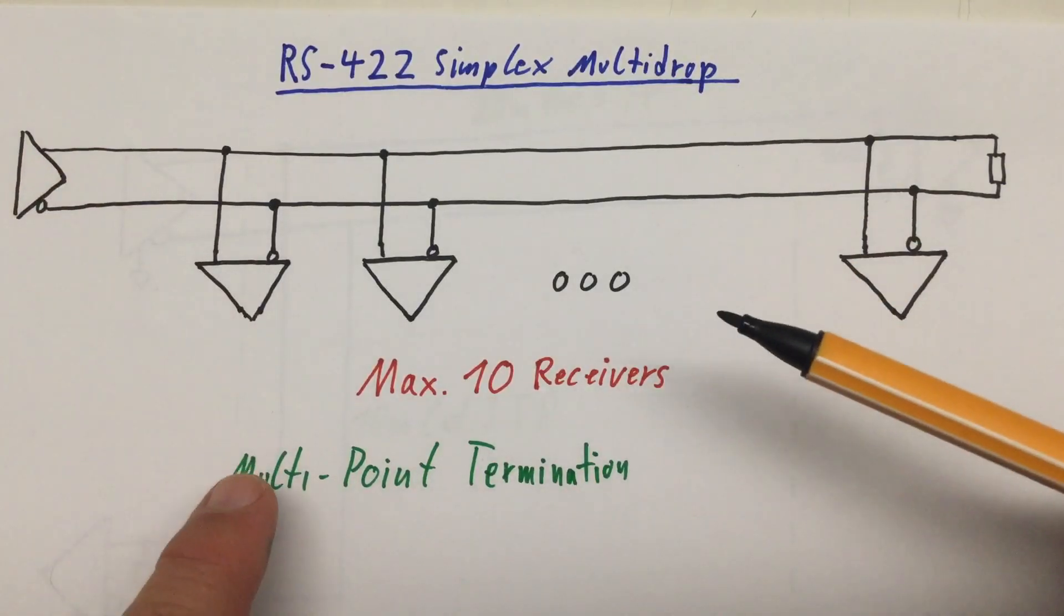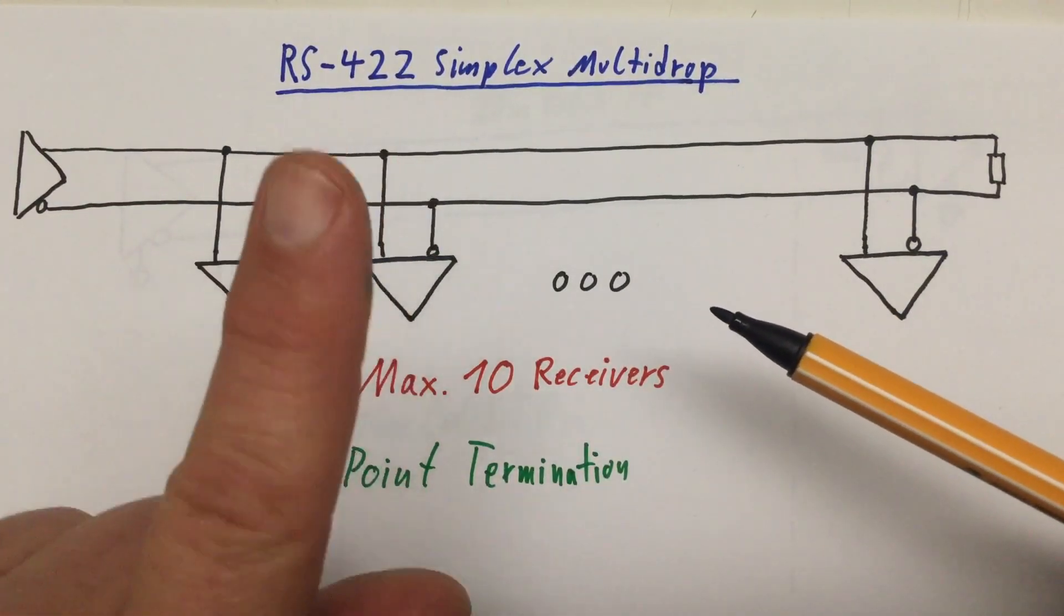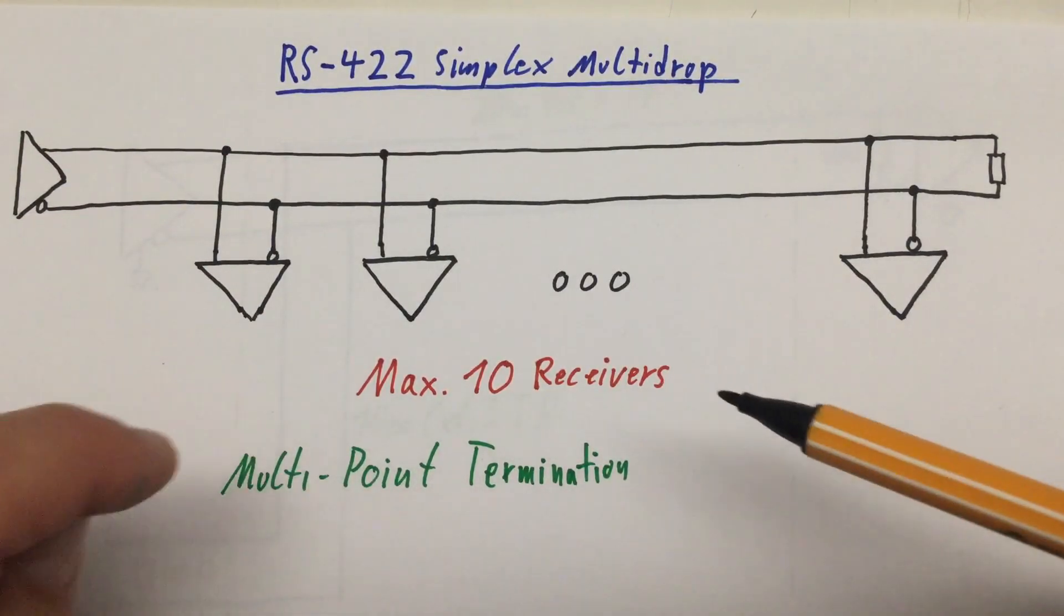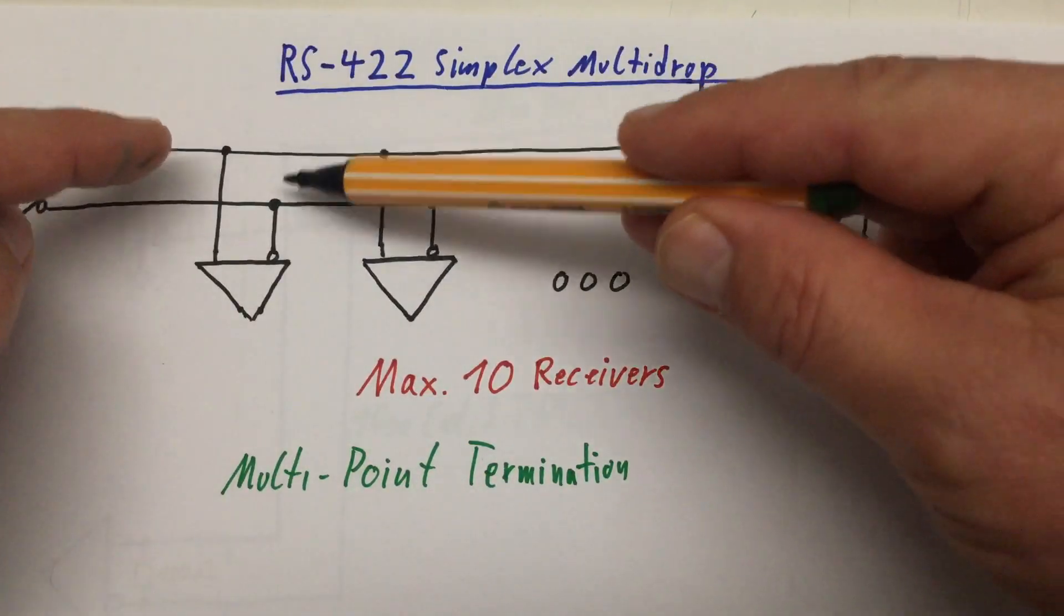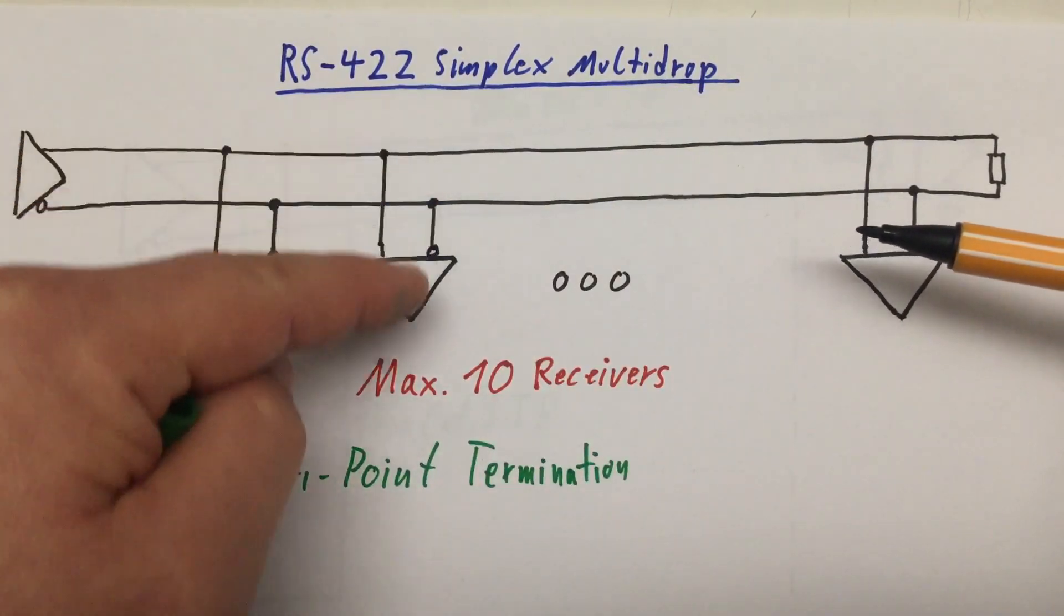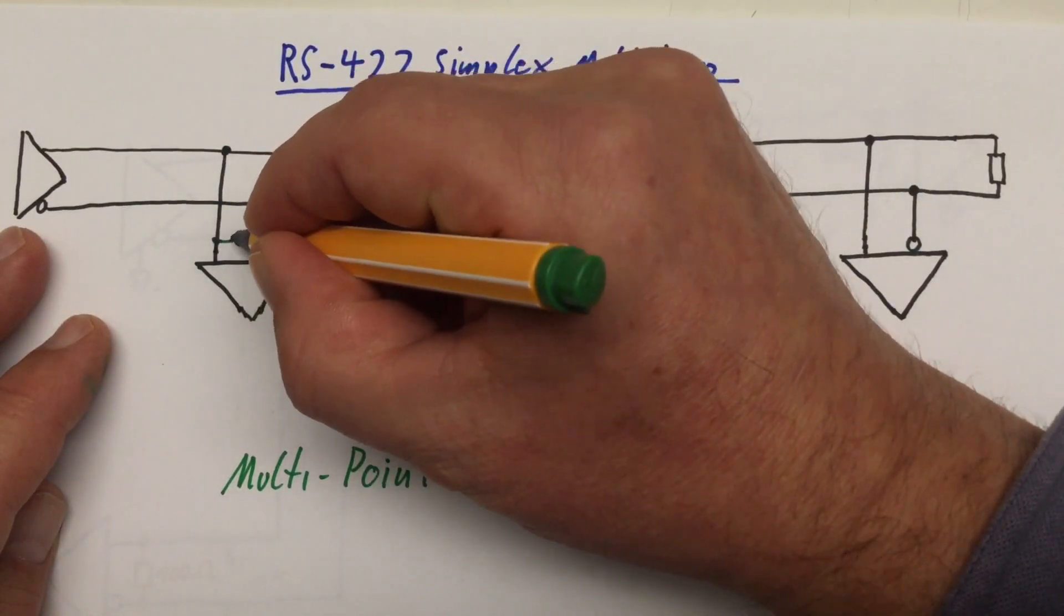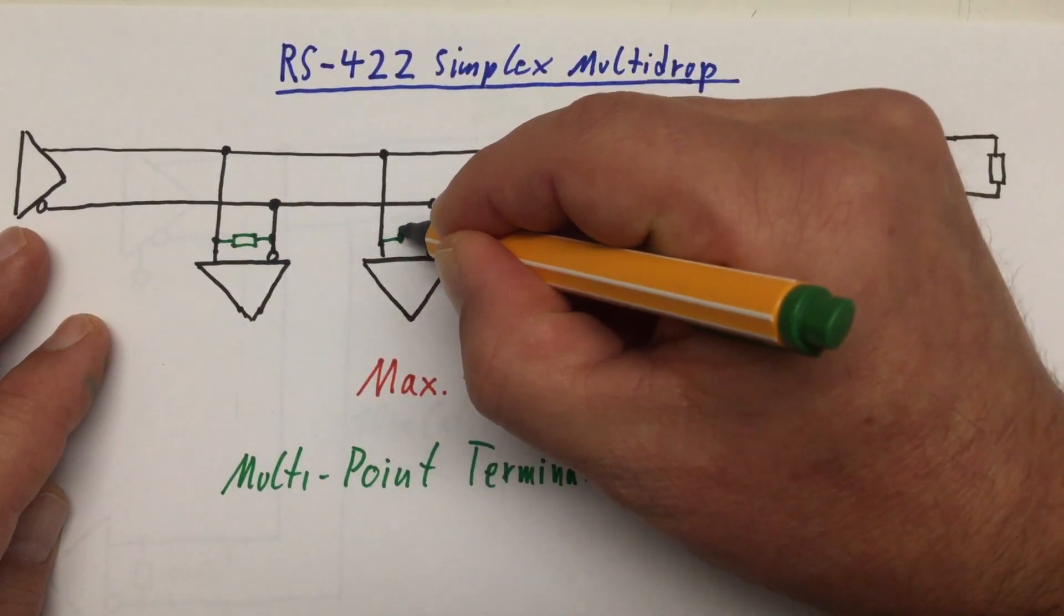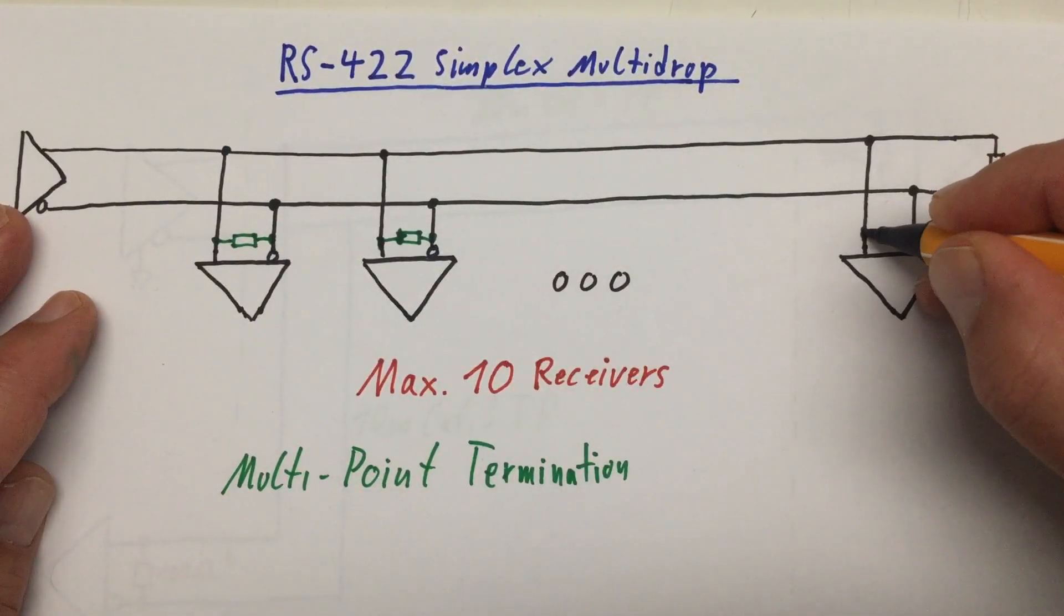So, what we've done here is a multi-point termination. I mentioned that at the very end of part 1 of the details. I didn't go into the details back then, but basically, you need multi-point termination if you have several receivers and the stubs of these receivers get long. Then, you are really forced to put termination resistors here at the inputs of every single receiver depending on the stub length. If the stub is only very, very short, you don't really need that.